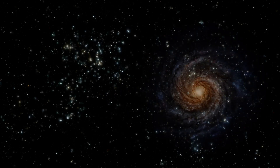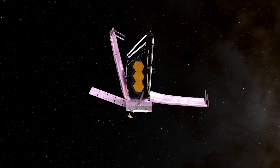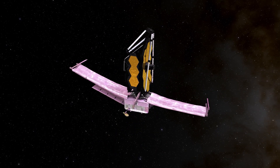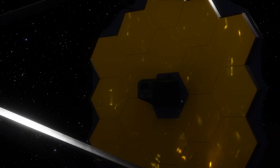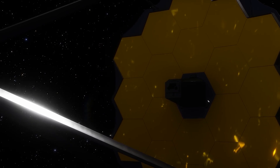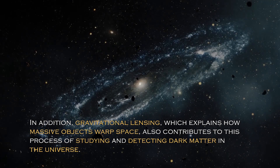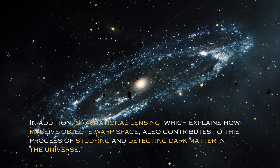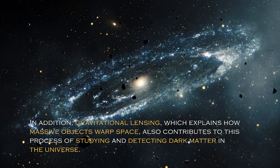Scientists postulate that dark energy is a mysterious force behind this expansion, while dark matter — invisible but existing in the universe — also plays a crucial role. Over the years, several methods have been developed to measure or detect dark matter in the universe, with the James Webb being a valuable resource because of its high-resolution images that allow astronomers to calculate the amount of dark matter in specific areas of the cosmos. In addition, gravitational lensing, which explains how massive objects warp space, also contributes to this process of studying and detecting dark matter in the universe.